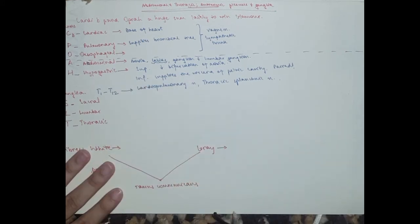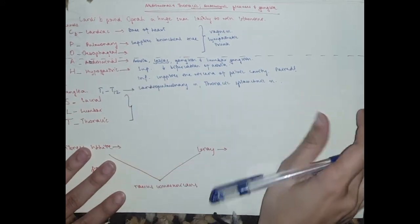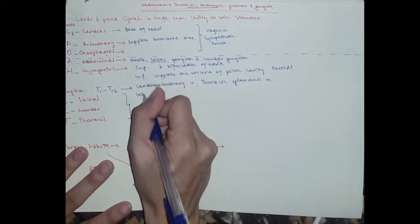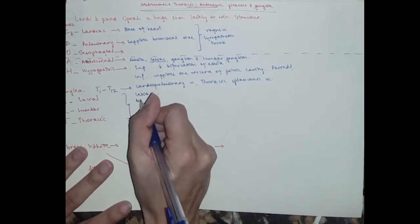You know sacral, lumbar, thoracic. There are ganglia. And in addition to this, if you remember from the sympathetic video again, we've got four more ganglia which is celiac. Do you remember celiac ganglion? You've got the aorticorenal.